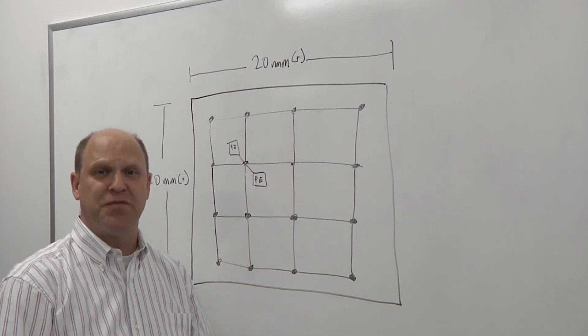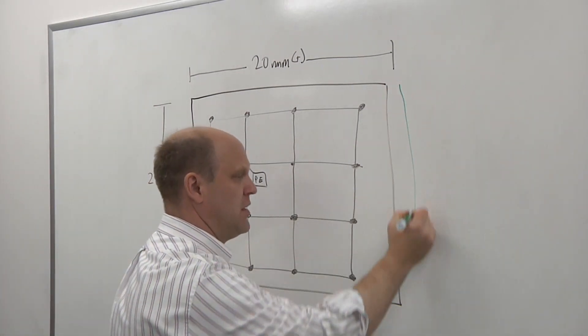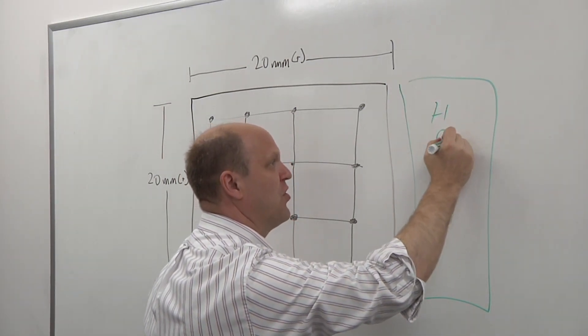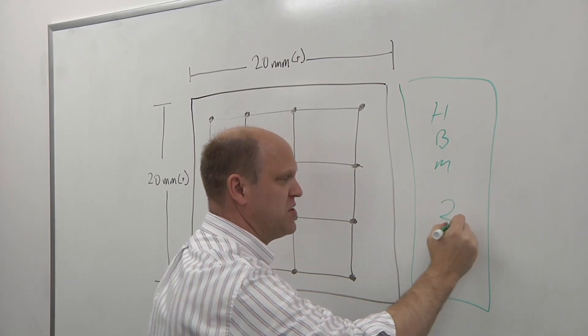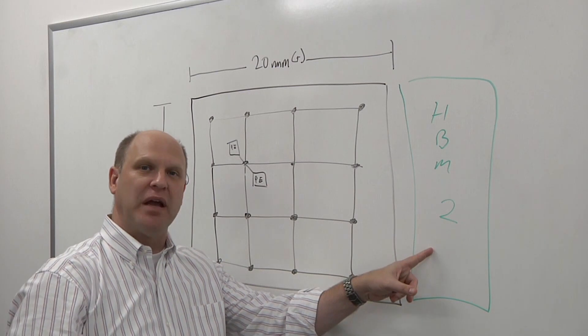That's within the system and the transfer of data through the system. But also you have off-chip memory. For example, HBM2 is used quite a bit now. Also could be GDDR6. But what is happening here is these are very wide bandwidth.